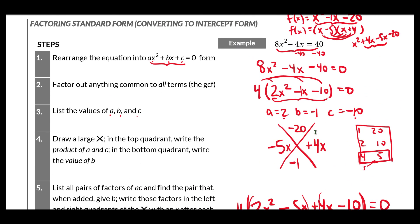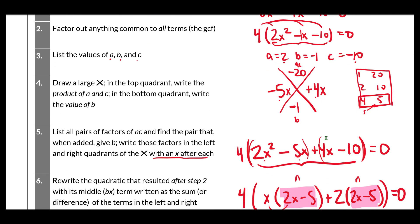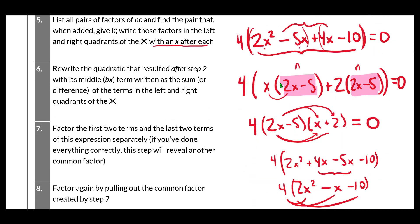To summarize the process: factor out anything common to all three terms. Look at the resulting trinomial, write your a, b, and c. Draw your X, put a·c at the top and b at the bottom. Find the two factors of the a·c product that add or subtract to give you b. Rewrite the middle term as a sum or difference of those two items. Then factor by grouping — take what's common to the first two terms, take what's common to the last two terms, pull those out, and you'll find a common factor. Factor one more time and you're done.